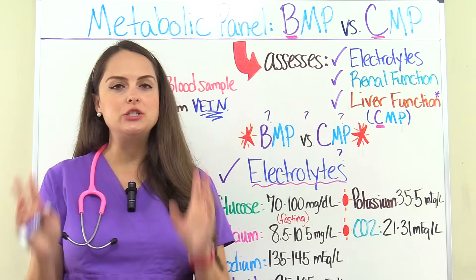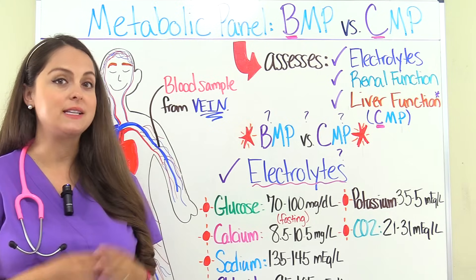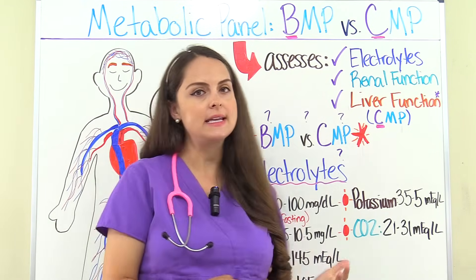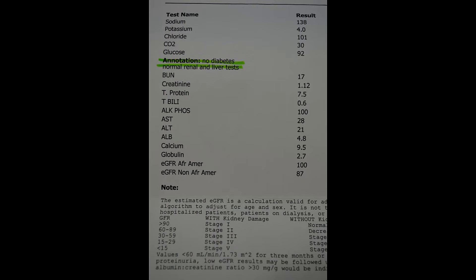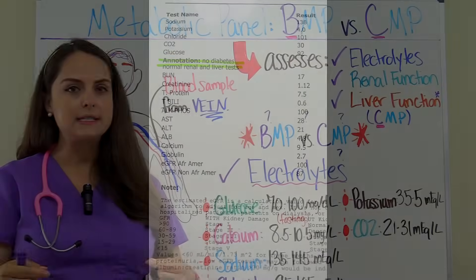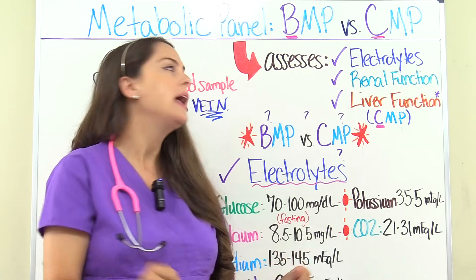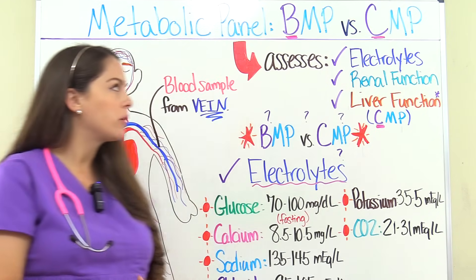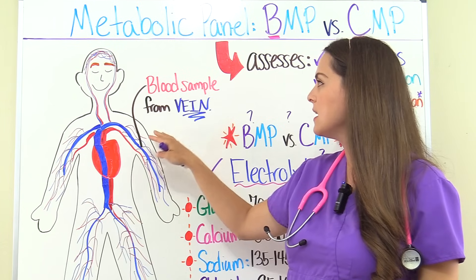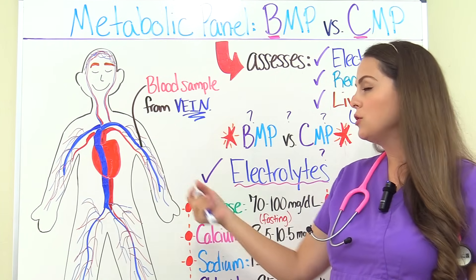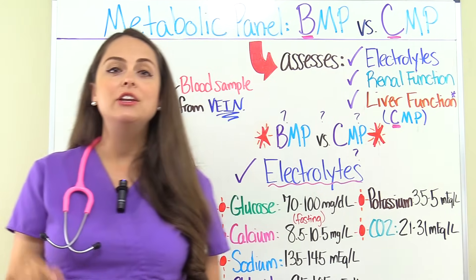A metabolic panel can be ordered in two ways by the physician. They can order a basic metabolic panel, which is a BMP, or a comprehensive metabolic panel, known as a CMP. The CMP is called comprehensive because it looks a bit more into the blood — including electrolytes, renal function, and also liver function. Regardless of which is ordered, the sample is collected through a vein in the arm: you withdraw blood, put it in a tube, send it to the lab, and get results back.